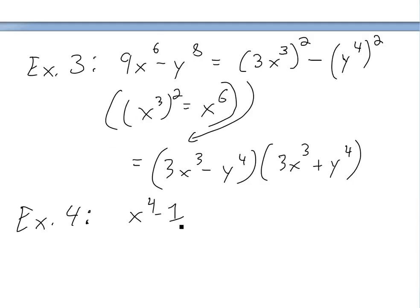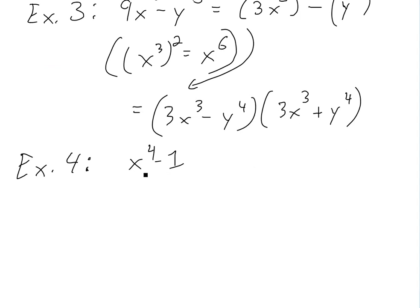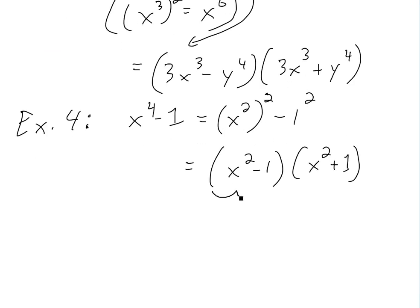Now the last example, this one's a bit tricky: x to the 4 minus 1. This can be written as a square as well. This is x squared squared minus 1 squared. 1 is always written as a square because 1 squared is always 1. The square doesn't really change the value of it. So we can write this as x squared minus 1 times x squared plus 1. But now this is also a difference of squares, so we could simplify this even further.